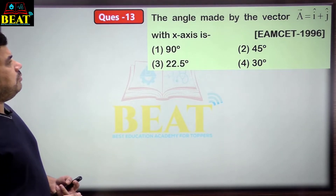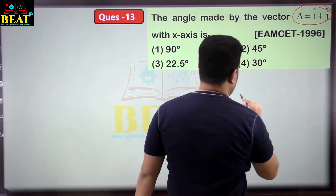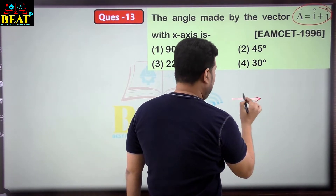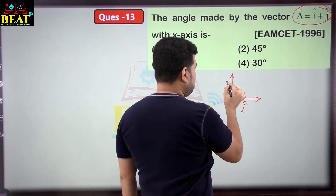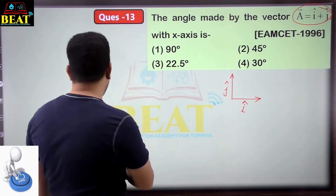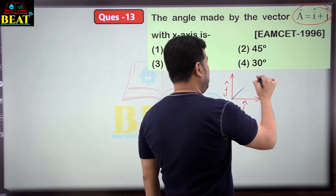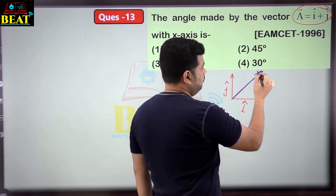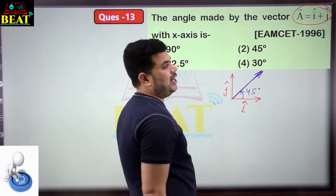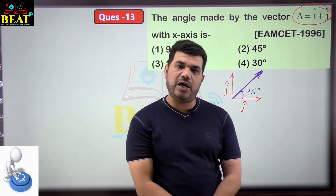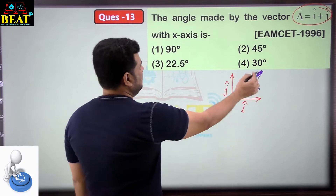Question 13: angle made by the vector i cap + j cap with an axis. Since both i cap and j cap are equal unit vector components, the resultant falls exactly in the middle. Whether measured from x-axis or y-axis, the angle is 45 degrees. Correct answer is 45°.